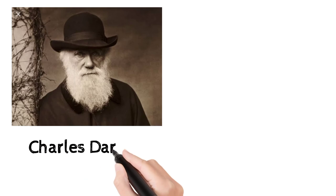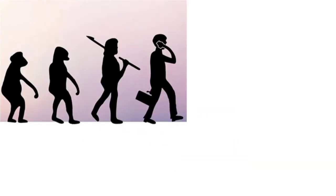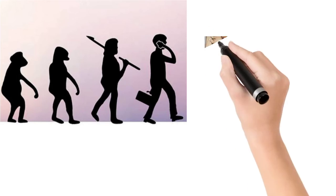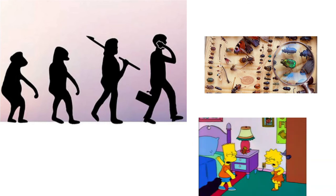Charles Darwin is the one who founded the biological approach to psychology. When we look into evolutionary psychology, it uses evolutionary theory to explain similarities in psychological characteristics. According to evolutionary psychologists, patterns of behavior have evolved through natural selection in the same way that physical characteristics have evolved.